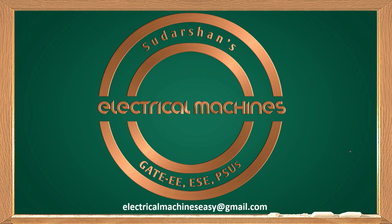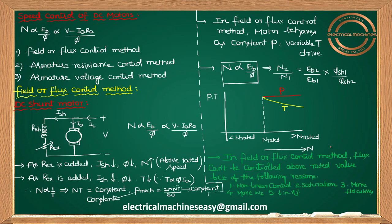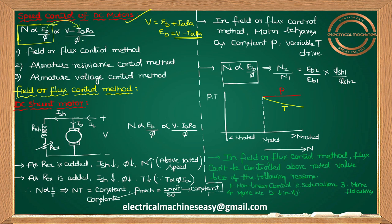Welcome back to a new session. In this session on DC motors, we will start speed control of DC motors. We know the relation N proportional to Eb by φ, which we had seen in the last session. For a shunt motor, V equals Eb plus Ia·Ra, so from this, Eb equals V minus Ia·Ra.